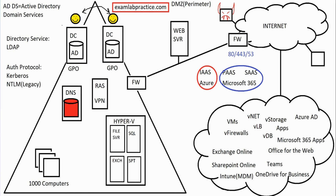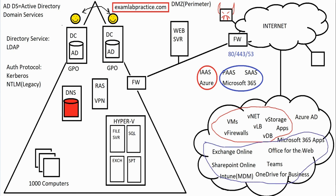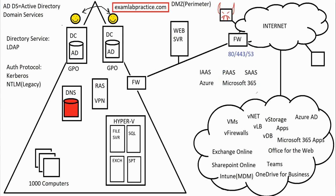Drawing a circle around the services: virtual machines, virtual firewalls, load balancing, VNets, and storage would be Azure-related. Exchange Online, SharePoint Online, Teams, OneDrive, and Intune would be Microsoft 365-related. Both share Azure AD. With Azure, you pay for CPU, RAM, and storage you use. With Microsoft 365, it's all based on licenses — you purchase subscriptions with a certain number of licenses and issue them to users.